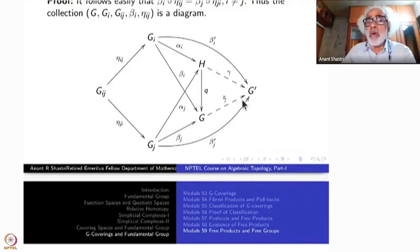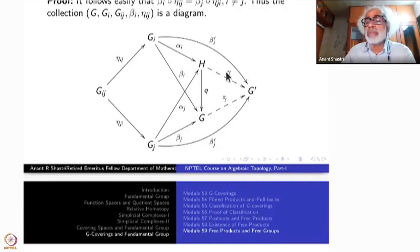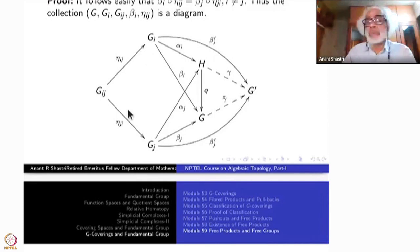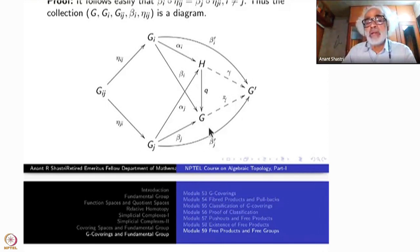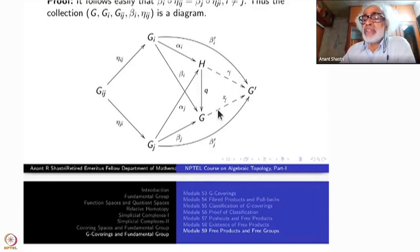Therefore gamma factors down, by the first isomorphism theorem, to a map gamma-bar from G to G prime, because G is nothing but H/N by definition. So there is a homomorphism here, automatically. It is defined by the commutativity: this gamma-bar is defined by gamma. Therefore, once this diagram is commutative, all the other diagrams will be automatically commutative. So this gamma-bar makes this diagram commutative.